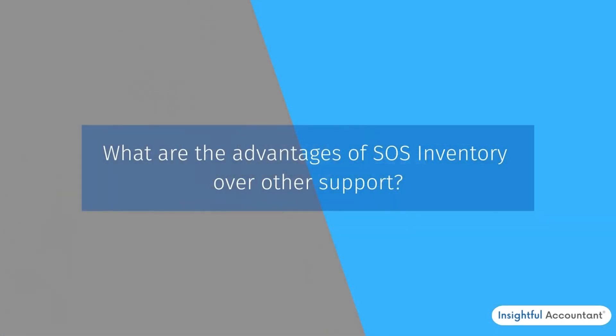SOS Inventory is an inventory, order management, and manufacturing app that integrates with QuickBooks Online. It automatically syncs information with a bi-directional sync. So if you're working in QuickBooks Online, data will automatically sync to SOS Inventory, and vice versa — if you're working in SOS, data will automatically sync to QuickBooks Online. That bi-directional syncing of data is automatic, and it is priceless.